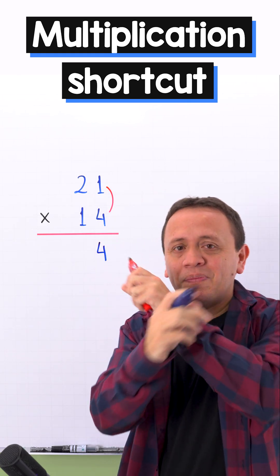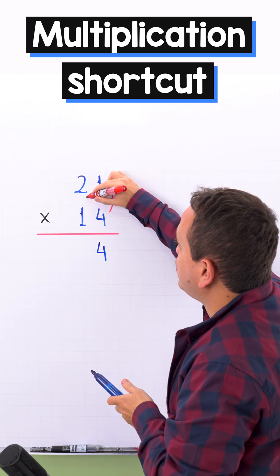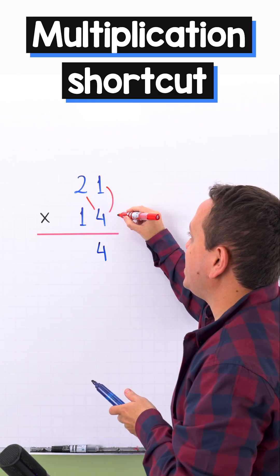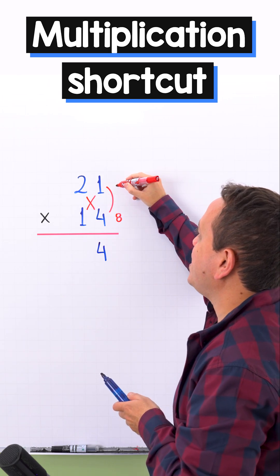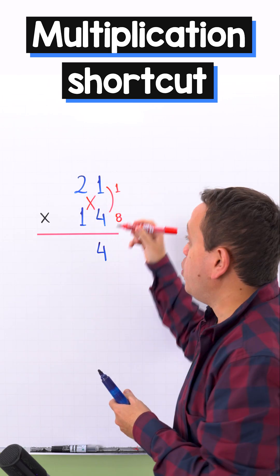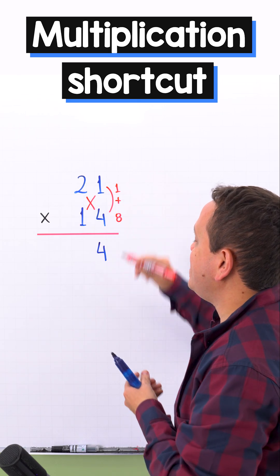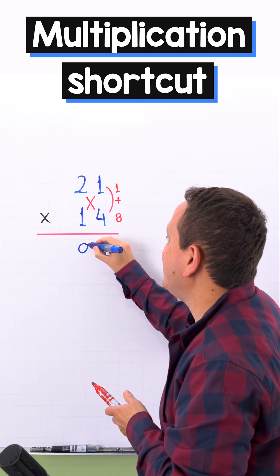Then we need to cross multiply. On this side we have 2 times 4 and 2 times 4 give us 8. On the other side we have 1 times 1 and 1 times 1 equals 1. Then we add 1 plus 8 give us 9. That is correct.